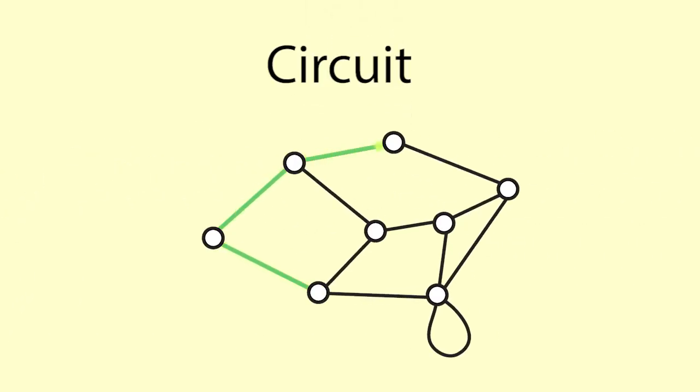Circuit. A circuit is a path that starts and finishes at the same node. Circuits are sometimes called cycles. When we analyse a network, we often need to find paths or circuits.